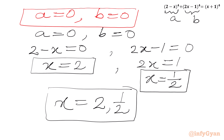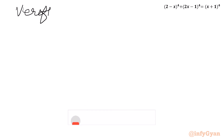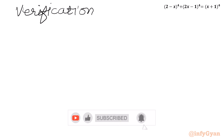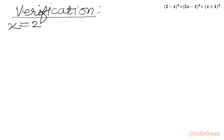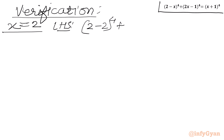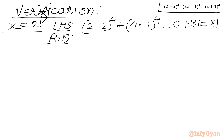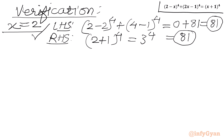Now we will verify our solutions. Let's check x equal to 2. LHS: (2 minus 2)^4 plus (2 times 2 minus 1)^4 equals 0^4 plus 3^4 equals 81. RHS: (2 plus 1)^4 equals 3^4 equals 81. LHS equals RHS, so x equal to 2 is a verified true solution.